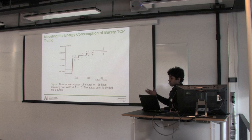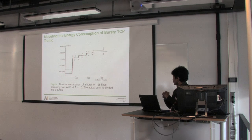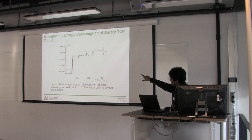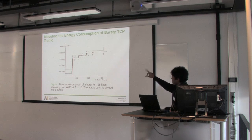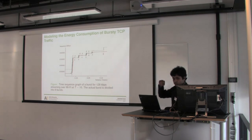When the client buffer cannot hold the whole burst, TCP flow control activates and the actual burst is split: one big burst followed by some small bursts due to TCP flow control. This is the main reason we see power consumption increase after a certain period.